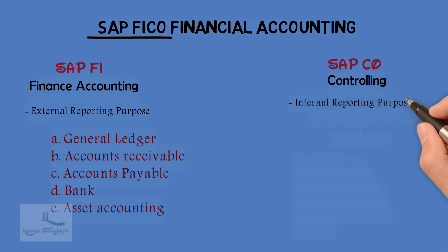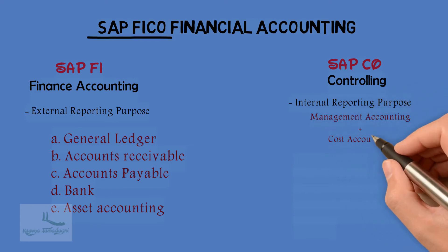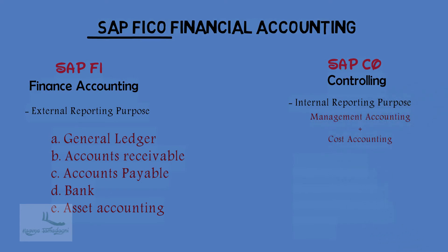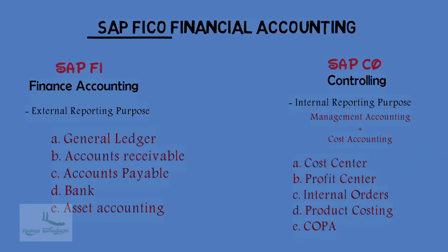Controlling can be termed as the combination of management accounting and cost accounting. Management accounting helps management make better decisions, and cost accounting helps with product costing and its analysis. The sub-modules of Controlling are Cost Center, Profit Center, Internal Orders, Product Costing, and COPA.